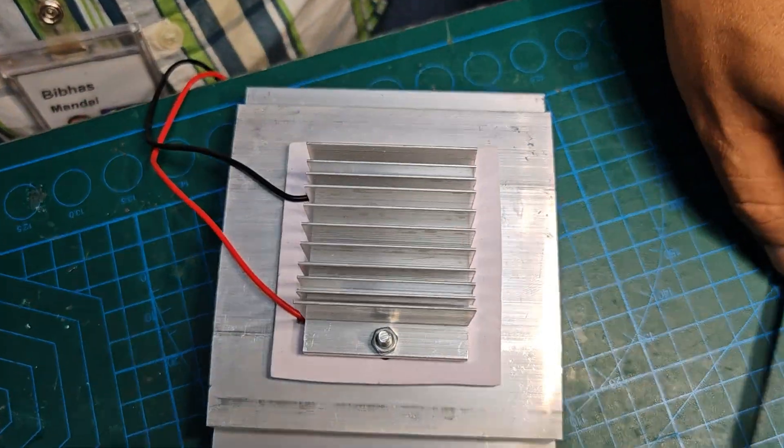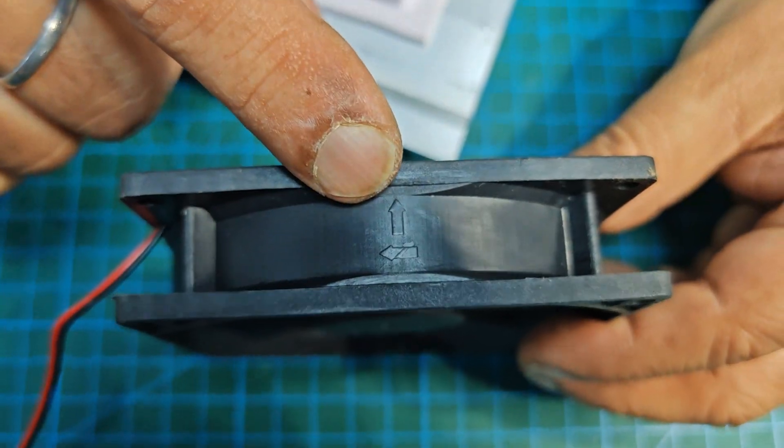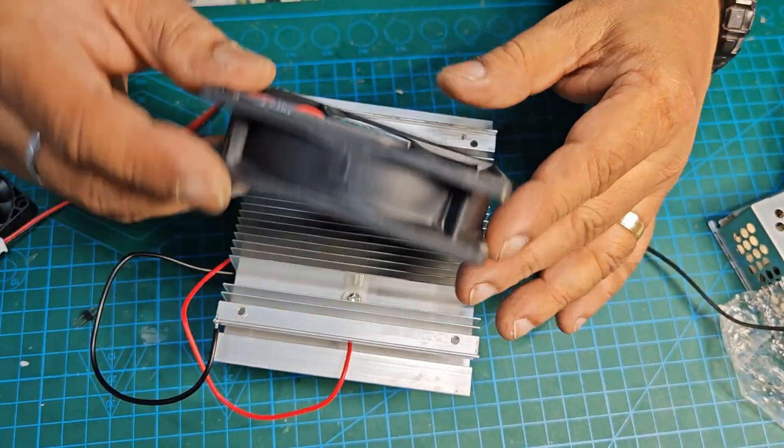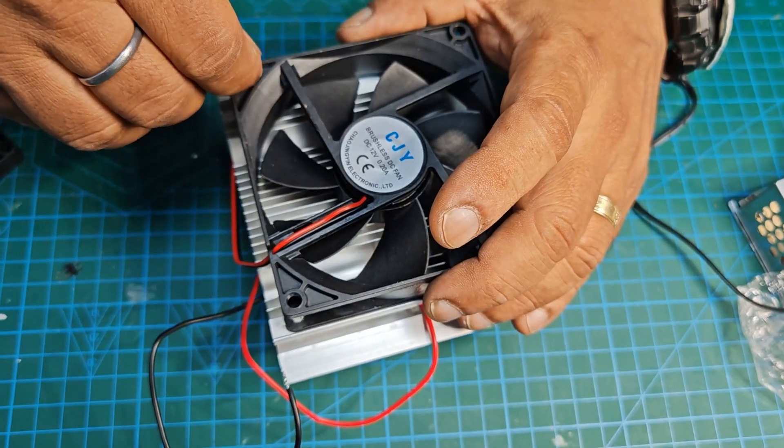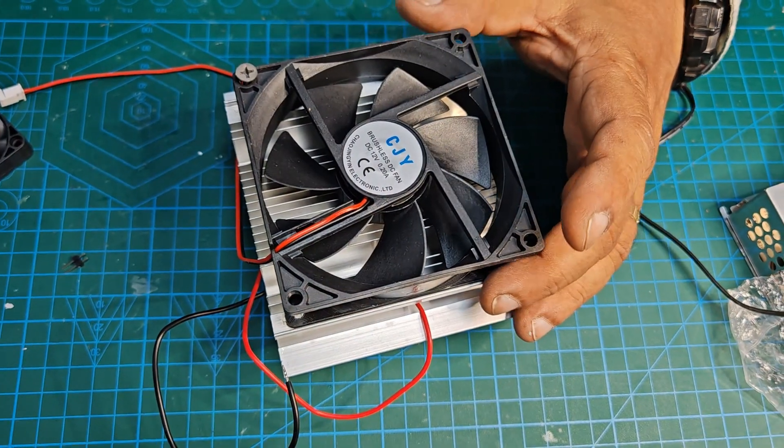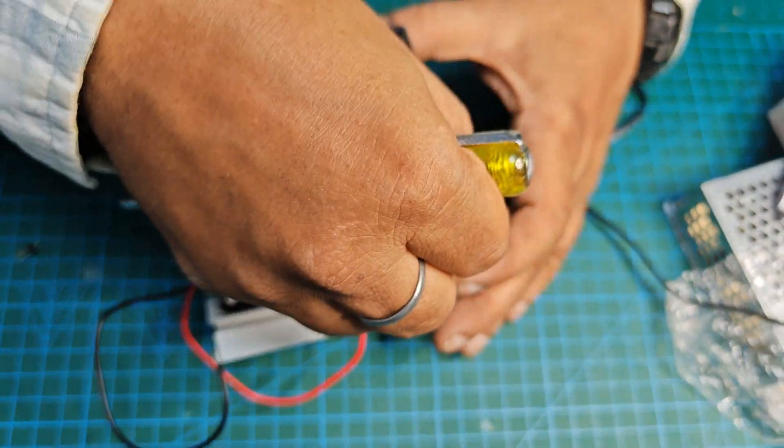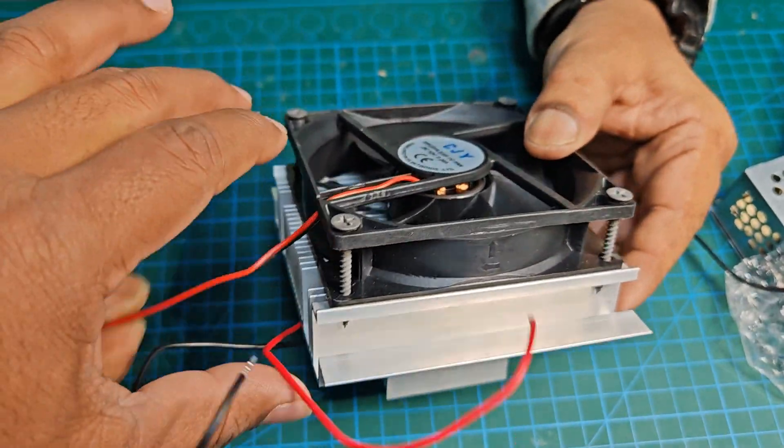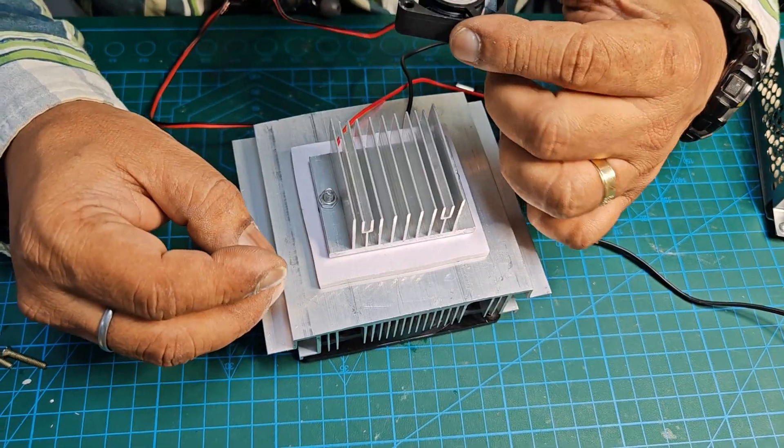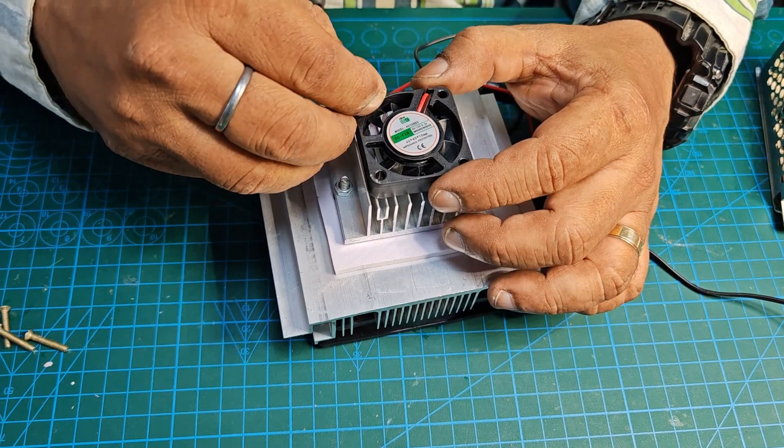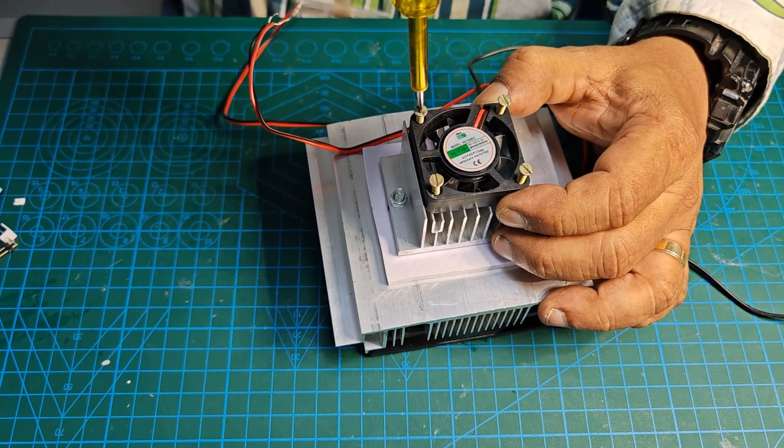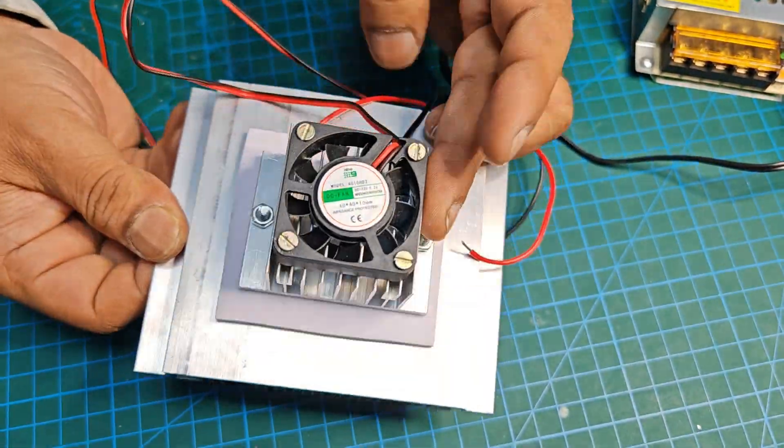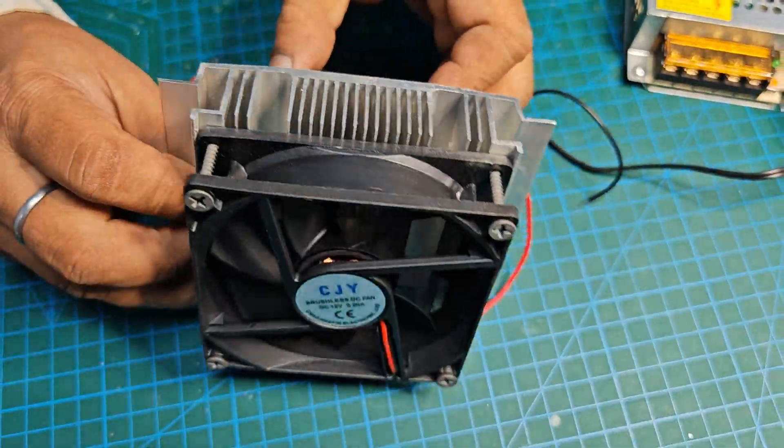This arrow indicates on the fan the direction of the air where it is going to flow. It should carry away all the heat from the heat sink to the atmosphere. So we have fitted the fan on the heat sink. Now let us fit another fan. Again, tighten all the four screws properly. We have done with fitting both the fan and both the heat sinks.